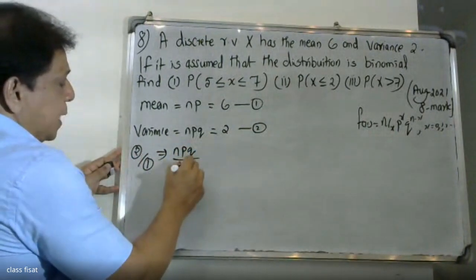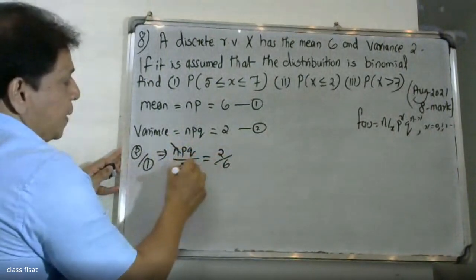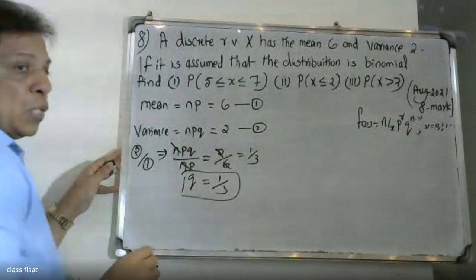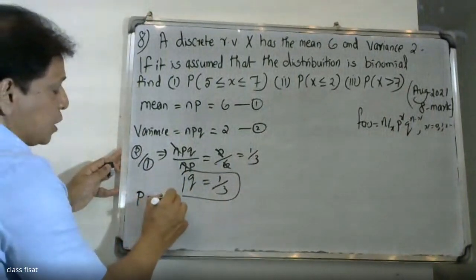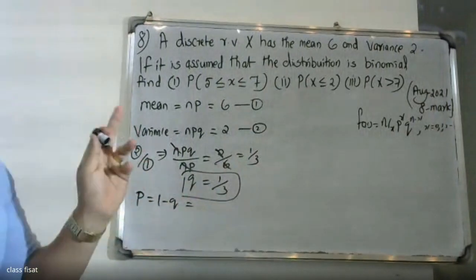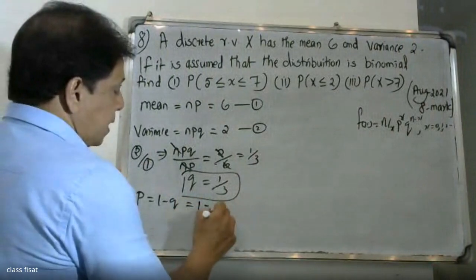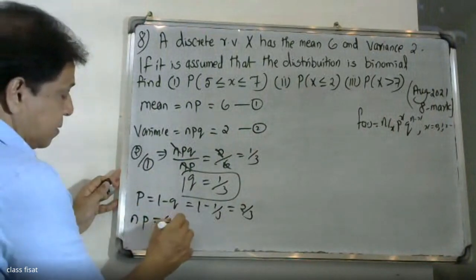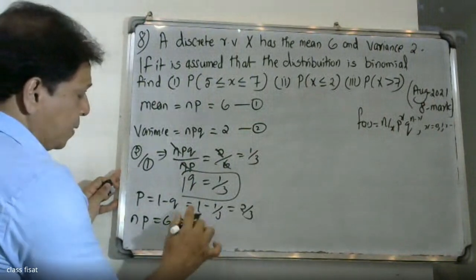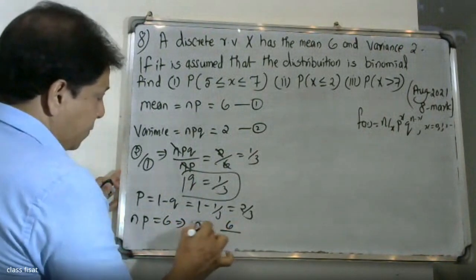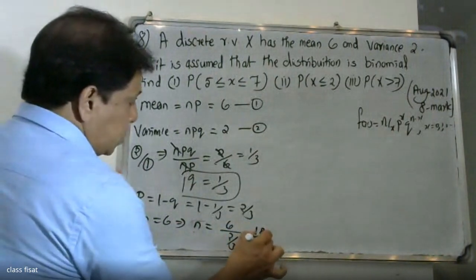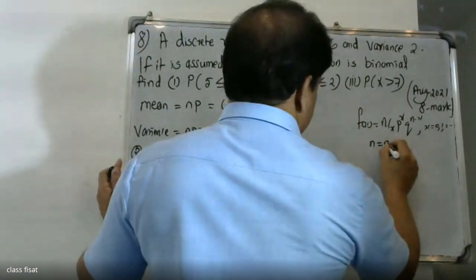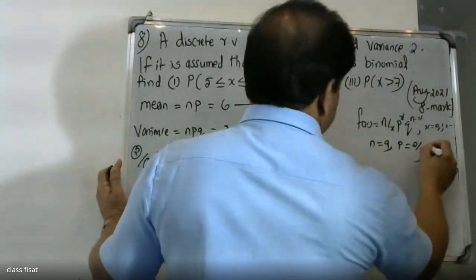Dividing variance by mean: npq divided by np equals 2 by 6. The np cancels, giving q = 1/3. Since p + q = 1, we get p = 2/3. From np = 6 and p = 2/3, we get n = 9.